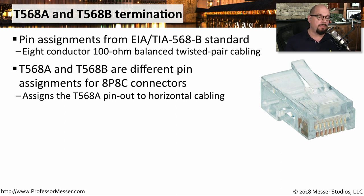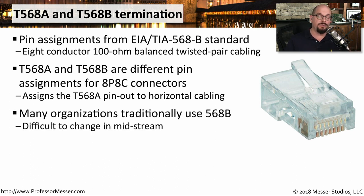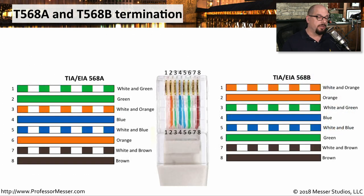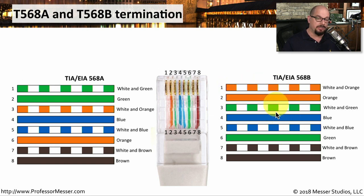These standards show that most people will use 568A for horizontal cabling — that would be cabling on the same floor — but many organizations have used 568B. As long as you've chosen one or the other and you stay consistent, you're not going to have a problem. If you punch down one side of the cable with the 568A standard and the other side with 568B, you're not going to have a straight-through cable. Visually, the 568A has white-and-green, green, white-and-orange, blue, white-and-blue, orange, white-and-brown, and brown as pins 1 through 8. The only differences between A and B are on pins 1, 2, 3, and 6 — pins 4, 5, 7, and 8 are exactly the same between the two standards.